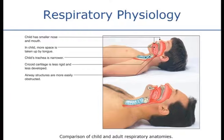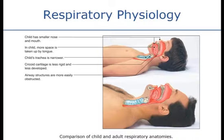The child's trachea is narrower and shorter, so it's more easily obstructed with fluid or a foreign body. The cartilage in their trachea is less rigid and less developed — it's softer — and when a child works really hard to breathe, they can actually collapse their trachea while inhaling very hard. It's the cartilage bands of the trachea that keep it open when we breathe; otherwise, the trachea would collapse without them.